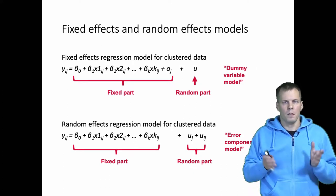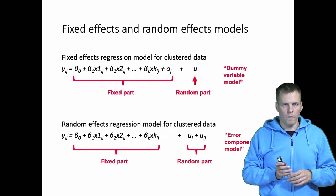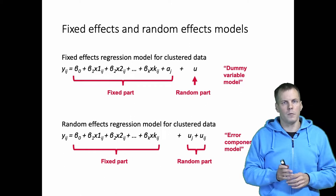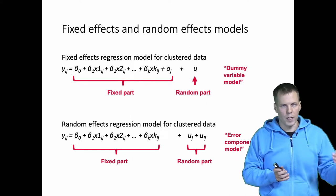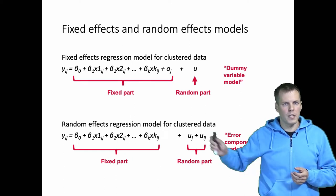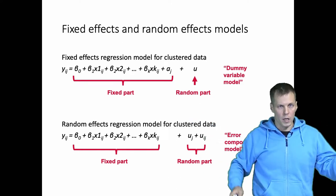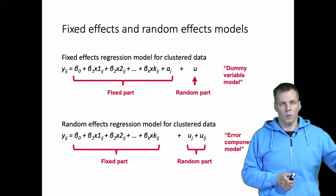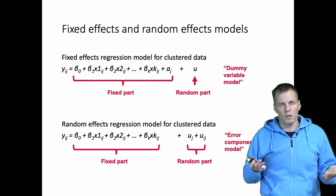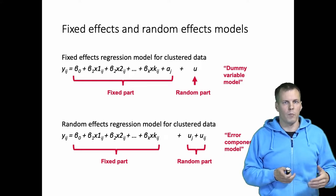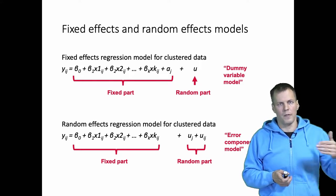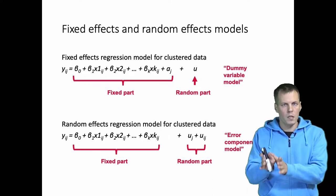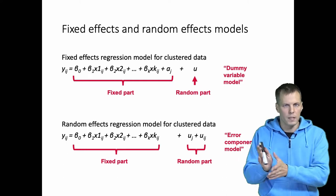So if we have 20 observations consisting of four companies each observed five times, we would add three dummies to the model and estimate a specific intercept for each company. The first company is used as a reference, and the intercept for other companies is obtained by summing the overall intercept and the dummy for that company. Estimating a specific value for the intercept for each company — that's the fixed effects strategy.